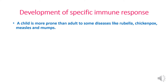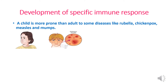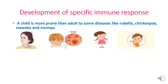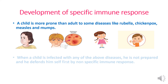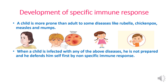A child is more prone or more affected than others to some diseases like rubella, chickenpox, measles, and mumps — when the salivary glands in the mouth become swollen. When a child is infected with any of the above diseases, he defends himself first by non-specific immune response.